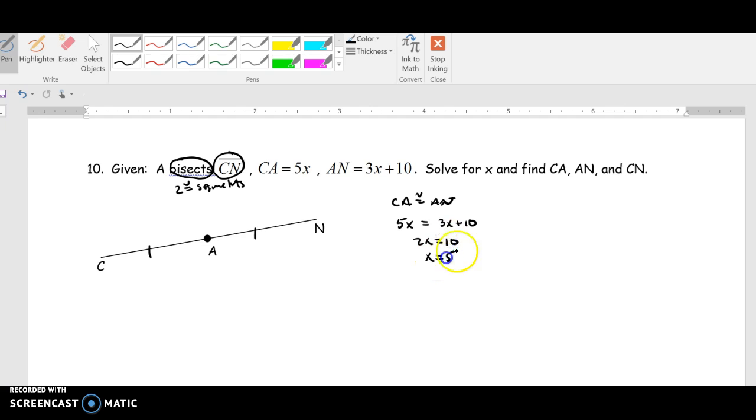X is equal to 5. Now, once I have the value of 5 for X, now CA is 5 times 5, which is 25. AN will also, because they're equal, you know AN is 25.